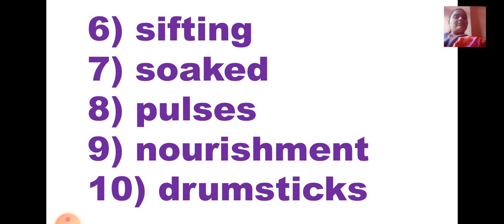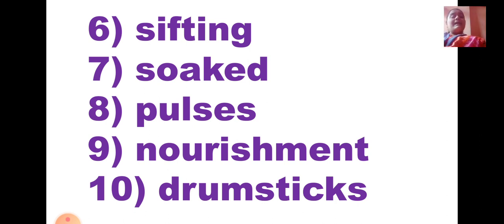Various types of dals all come under pulses. Ninth one is N-O-U-R-I-S-H-M-E-N-T, Nourishment. When you eat good and healthy food, you get nourishment from those food items, which helps you keep your body fit and healthy. The last one is D-R-U-M-S-T-I-C-K-S, Drumsticks. Drumsticks are a kind of vegetable — they are long. It is a kind of vegetable which provides you with a lot of nourishment.